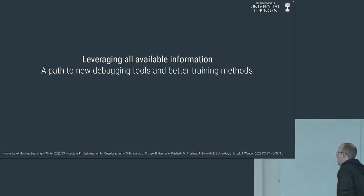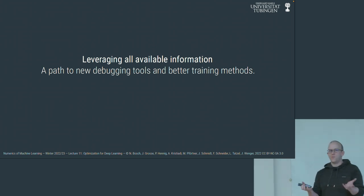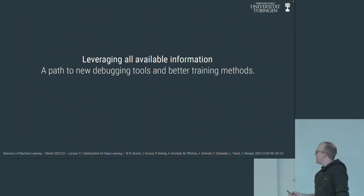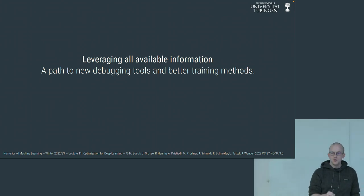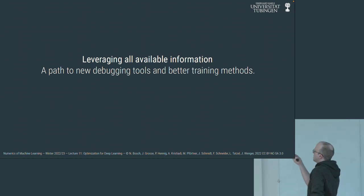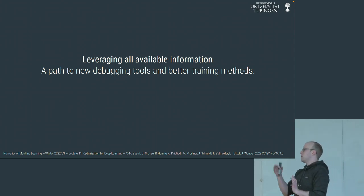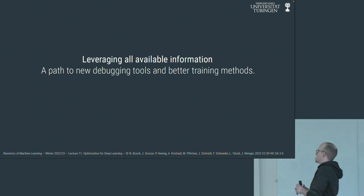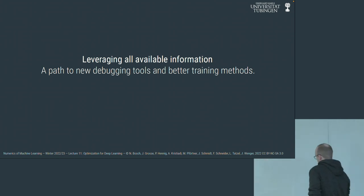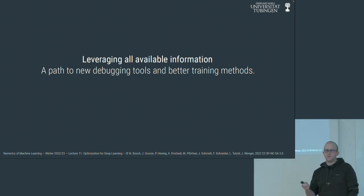Given the messy situation with so many methods, one strategy to improve things is to look into the methods in more detail. There might be additional information available in the training process that we could use — currently unused — and leverage it to build better algorithms that do more automatically, instead of us babysitting and tuning neural networks. Until we have those great new methods, we can provide some of this available information in the form of debugging tools for users.